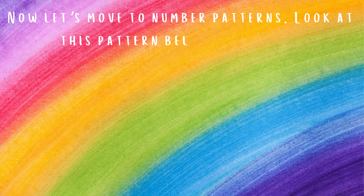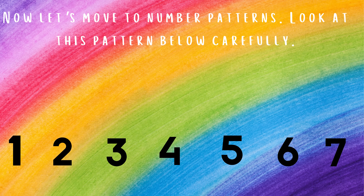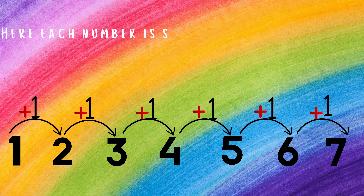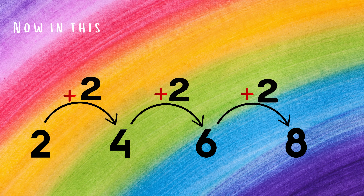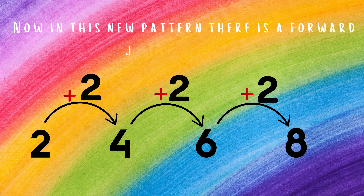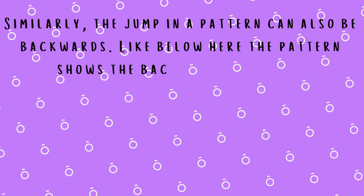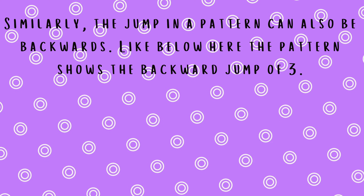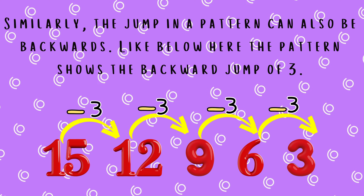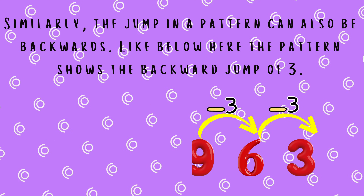Now let's move to number patterns. Look at this pattern carefully. Here each number is showing a forward jump of plus one. Now in this new pattern there is a forward jump of plus two. Similarly, the jump in a pattern can also be backwards — like here, the pattern shows a backward jump of three.